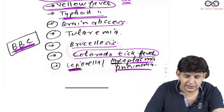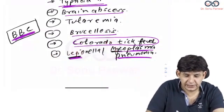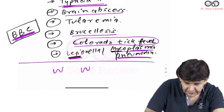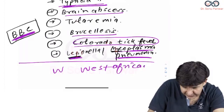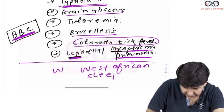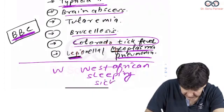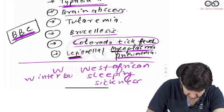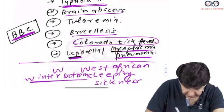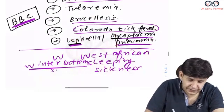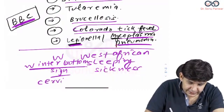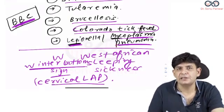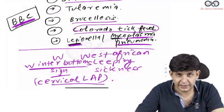The last sign in the options is Winterbottom sign. Winterbottom sign W for W, it is in West African sleeping sickness. This Winterbottom sign is nothing but cervical lymphadenopathy. This is termed as Winterbottom sign.